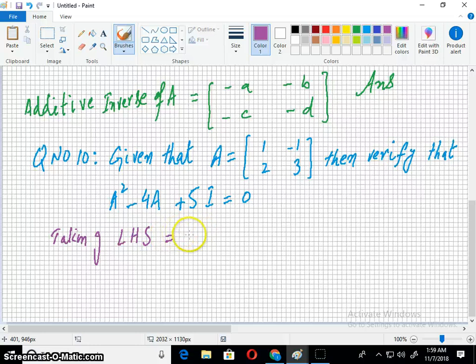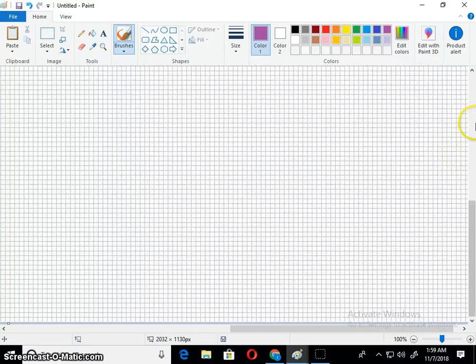Taking left-hand side, that is A² - 4A + 5I. And putting the values [1, -1; 2, 3] squared minus 4 into [1, -1; 2, 3] plus 5 into identity matrix [1, 0; 0, 1].